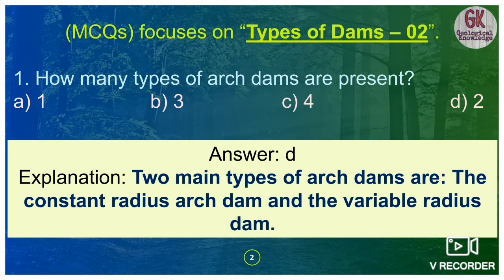An arc dam is a dam which is arc-shaped — a single concrete wall — where the convex side faces the upstream direction. Arc dams transmit water pressure to the abutments because of the arch action. That is why, in order to construct an arc dam, very strong abutment rocks are required.